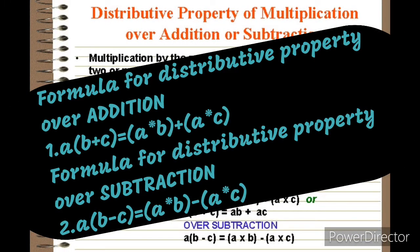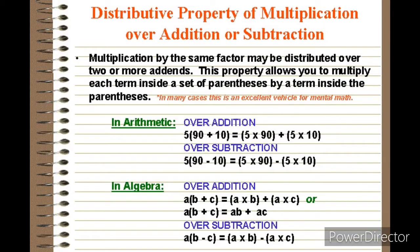Here the formula: a into b plus c equals to a into b plus a into c. For distribution over subtraction, a into b minus c equals to a into b minus a into c. You can see the examples in arithmetic. Please watch it.